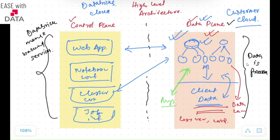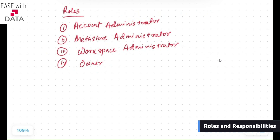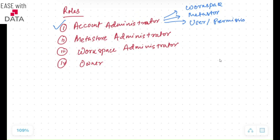Let's discuss the roles that Databricks offers. There are four major roles involved in a Databricks platform. The first one is the account administrator. The main purpose of an account administrator is to create workspaces. The account administrator also works with Metastores and is responsible for users and the permissions provided to users for different workspaces. User management, Metastore management, and workspace creation are the three most important tasks that an account administrator does.